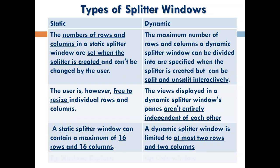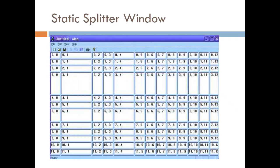In a dynamic splitter window, you can only have a maximum of two rows and two columns. Now let us see how these windows look like. For the static splitter window, I have a picture showing rows and columns — it can have up to 16 rows and columns. Here I have named the rows and columns. You can see row 3 and column 4 is bigger, which means resizing has been done, which is possible in a static splitter window.